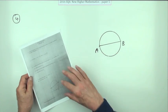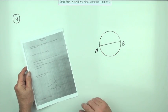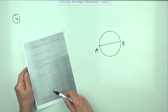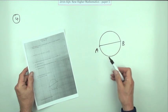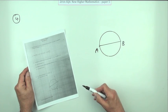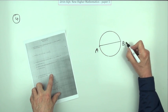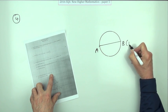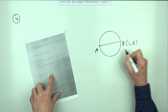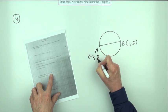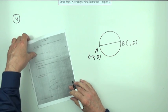Number 4 from the 2016 New Higher Maths Paper 1. We've got a circle question. AB is a diameter, and it gives you the coordinates. B is (1, 5) and A is (-7, 3).